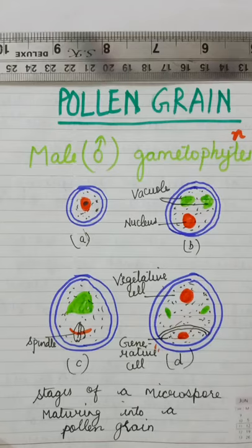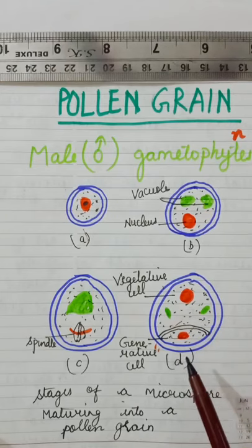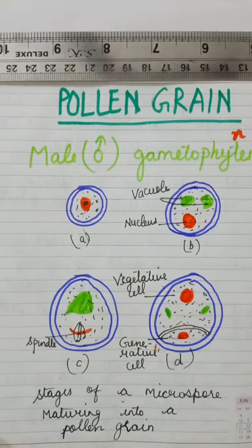In majority of angiosperms, the pollen grains are shed from the anther at this bicell stage. This is a bicell stage when generative cell and vegetative cells are present. But in some genera, both monocotyledons and dicotyledons, the generative cell divides prior to the dehiscence of the anther.